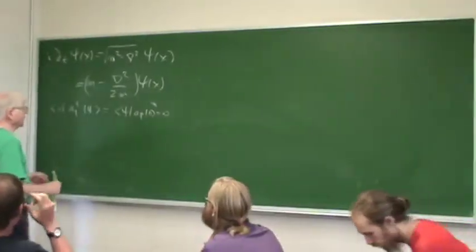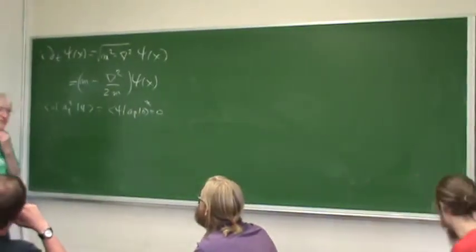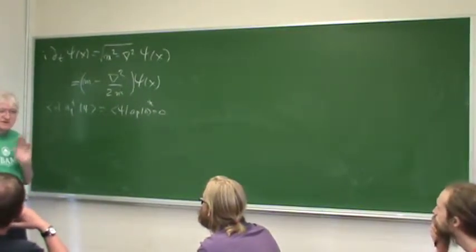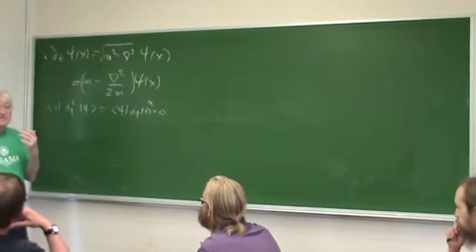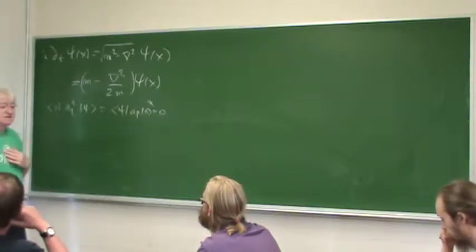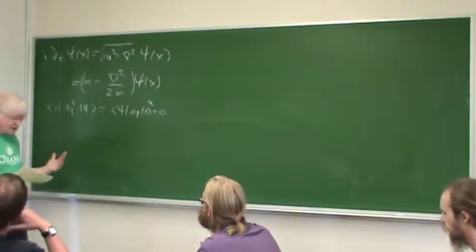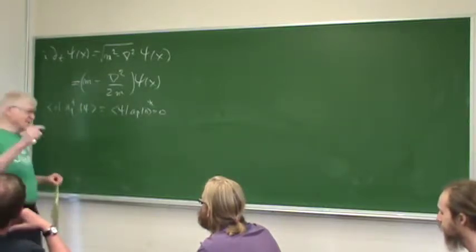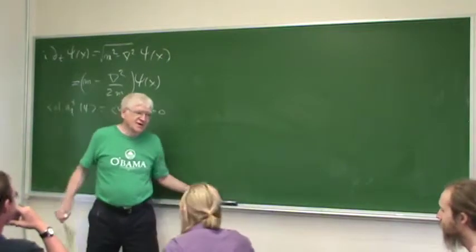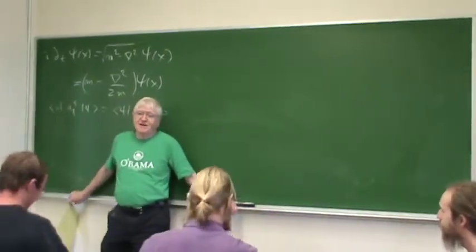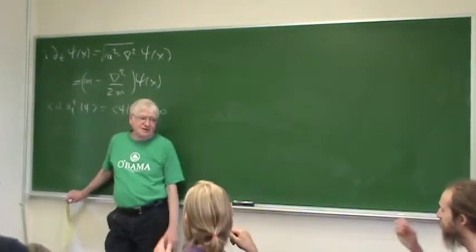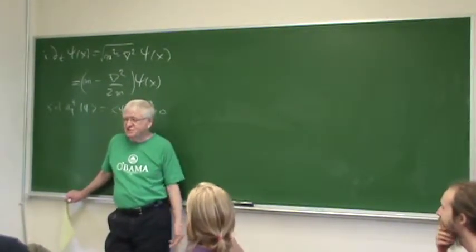Now what I want to do is show that the equal-time commutator of two fields vanishes. This once again will be a 'delta function as your friend' calculation.